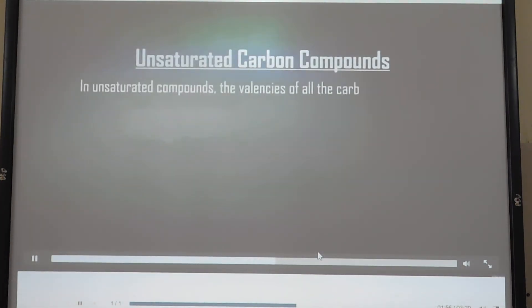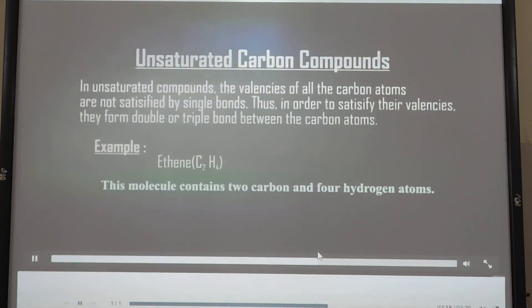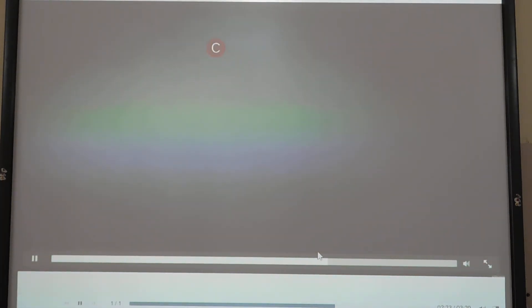Unsaturated carbon compounds: In unsaturated compounds, the valencies of all the carbon atoms are not satisfied by single bonds. Thus, in order to satisfy their valencies, they form double or triple bonds between the carbon atoms. For example, ethene (C2H4). This molecule contains two carbon and four hydrogen atoms. Let us look at the structure of ethene. The two carbon atoms combine together with a single bond. Each carbon atom gets two hydrogen atoms.